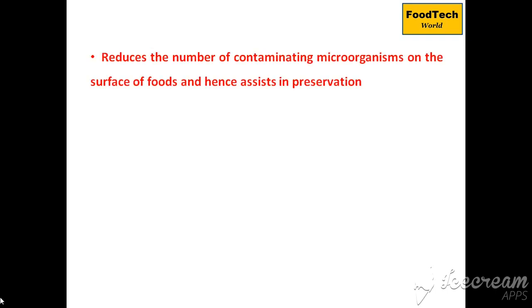The second function of blanching is to reduce the microbial load by up to 90% on the surfaces of food, helping in preservation. However, it is not the final method of preservation — it is a pre-treatment between the preparation of raw material and further processing steps.